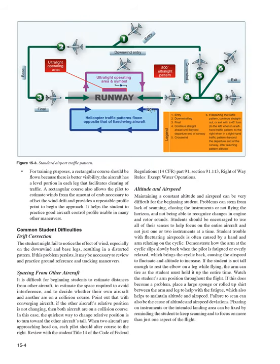For training purposes, a rectangular course should be flown because there is better visibility. The aircraft has a level portion in each leg that facilitates clearing of traffic. A rectangular course also allows the pilot to estimate winds from the amount of crab necessary to offset wind drift and provides a repeatable profile point to begin the approach. It helps the student practice good aircraft control, a profile usable in many other maneuvers.